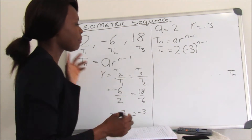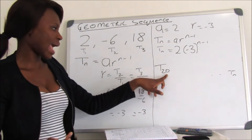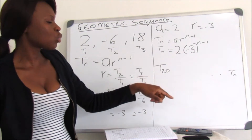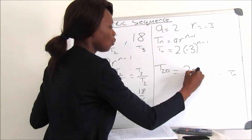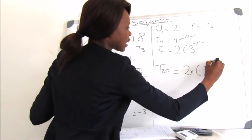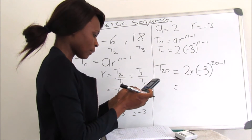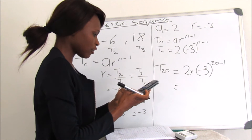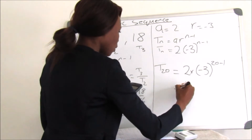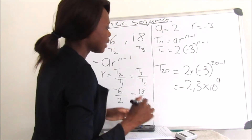The second question asks us to find T20. With T20, we are given n equals 20, so we replace n in our equation with 20. It becomes 2 multiplied by negative 3 to the exponent of 20 minus 1. Using a calculator, negative 3 to the exponent of 19 multiplied by 2 gives us the answer negative 2.3 times 10 to the power of 9.